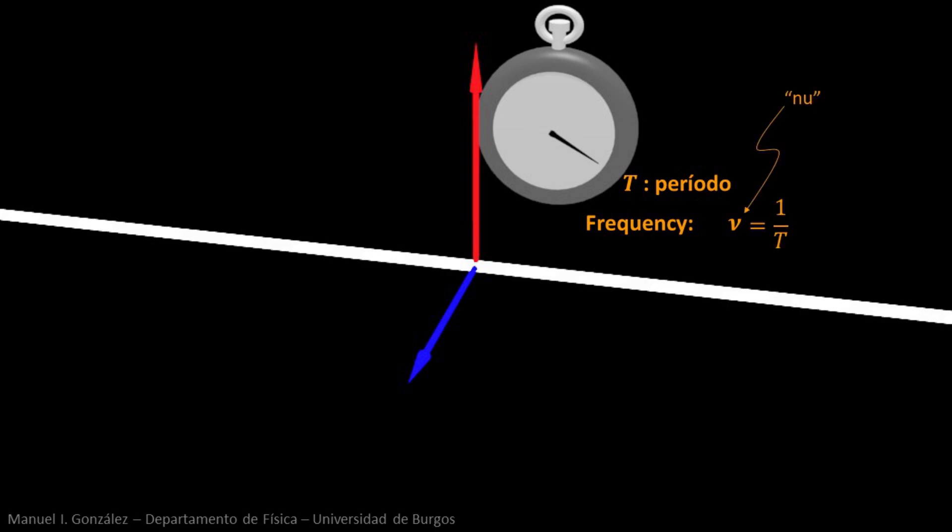It is represented as nu, the Greek n, and is measured in Hertz. A Hertz is an oscillation per second.